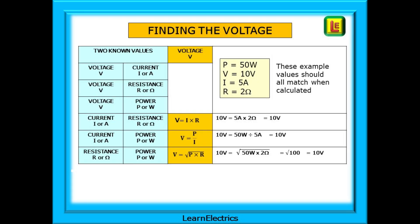Begin with the voltage column. There are three possible calculations, depending on what we already know, and each calculation will always give us the same answer of 10 volts, regardless of which pair of numbers we start with. Pause the video and take your time looking at the calculations.